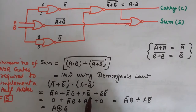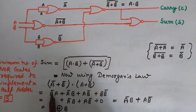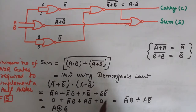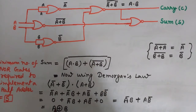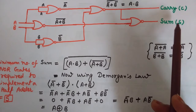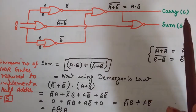Expanding: multiply Ā with (A+B) and B̄ with (A+B): we get ĀA + ĀB + B̄A + B̄B. We know A·Ā = 0 and B·B̄ = 0, so those terms cancel. We are left with ĀB + AB̄, which is A XOR B. This is the Sum expression. So we have implemented the half adder using only NOR gates — Carry = A·B and Sum = A XOR B.